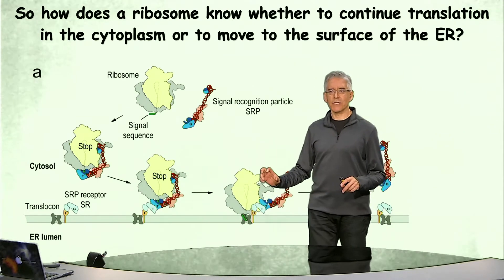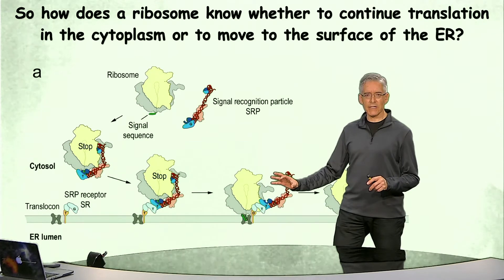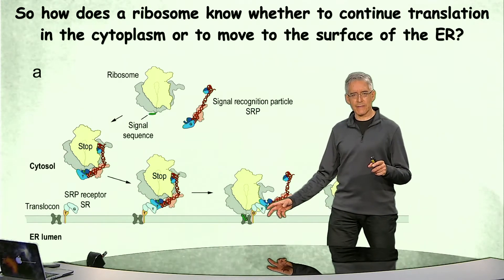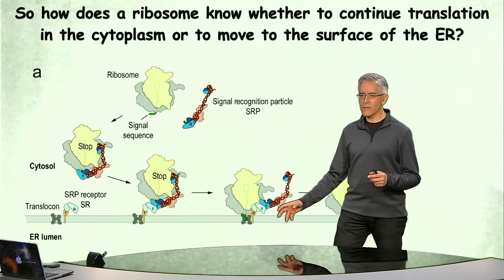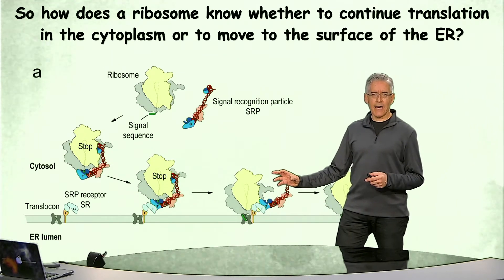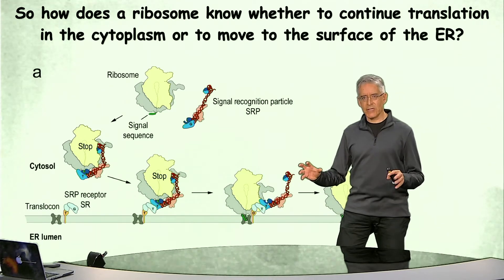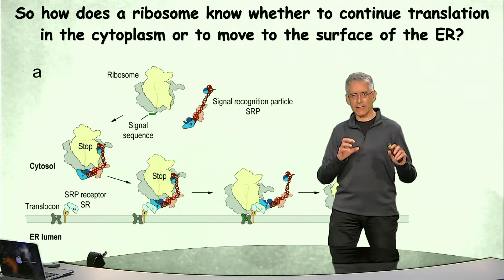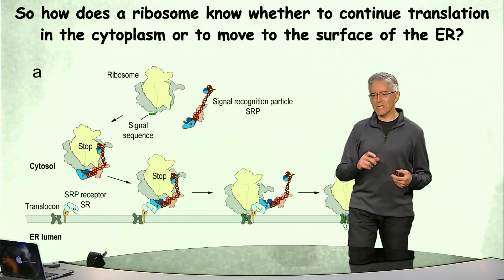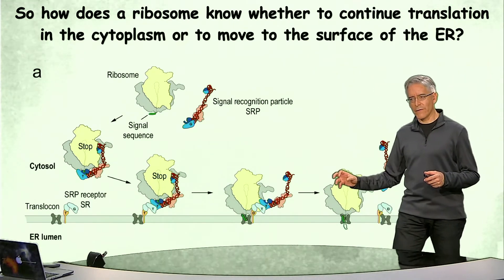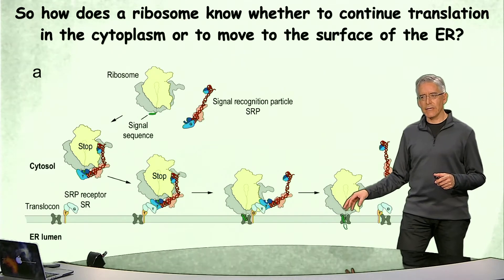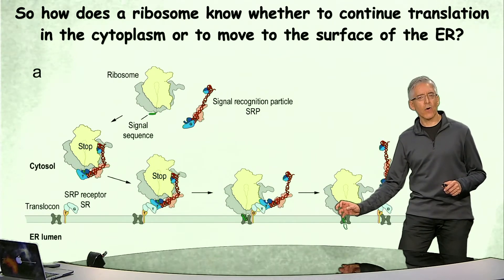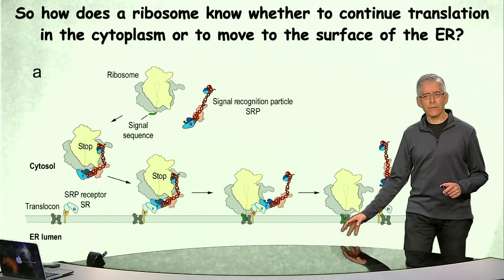At this point, the SRP disengages from both the signal sequence and the elongation factor site on the ribosome, allowing translation to resume. As the ribosome continues moving along the messenger RNA and synthesizing the protein, the newly synthesized protein comes out of the ribosome and goes directly into the channel of the translocon, and is therefore translocated co-translationally through the translocon into the endoplasmic reticulum. This process is referred to as co-translational translocation.